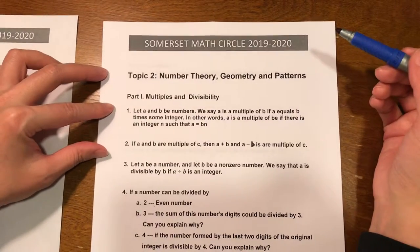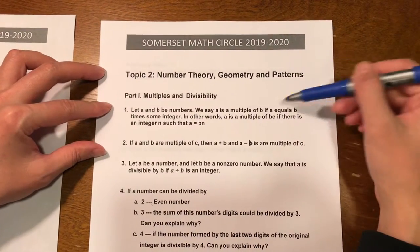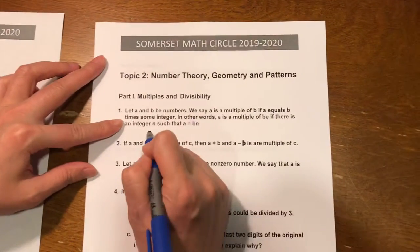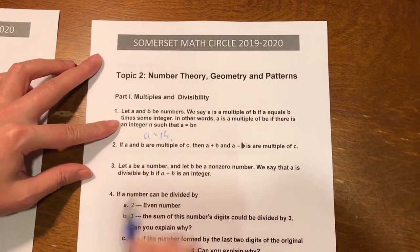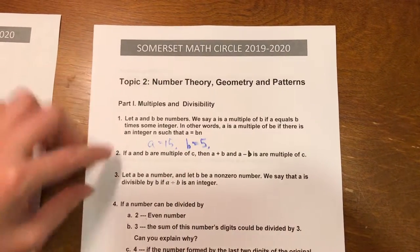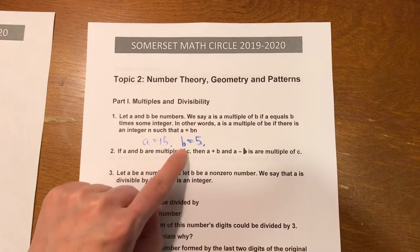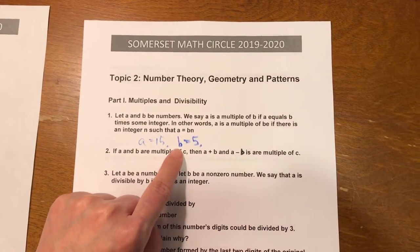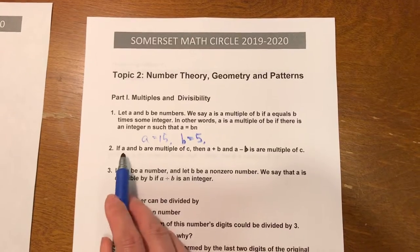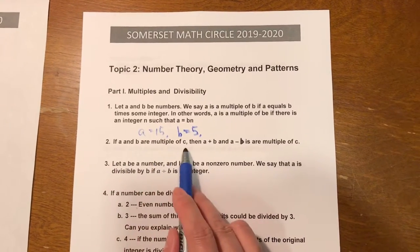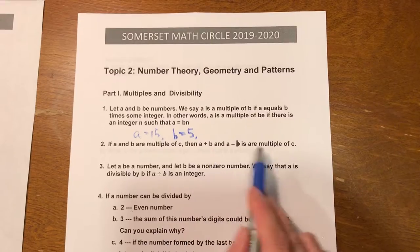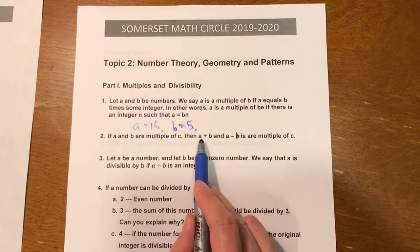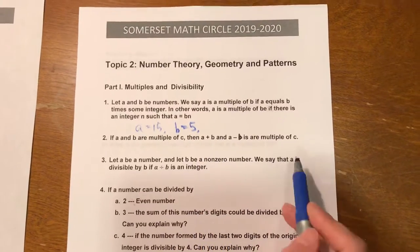Number 1, let A and B be numbers. We say A is a multiple of B if A equals B times some integer. For example, if A is number 15 and B is 5, we will say A is a multiple of B because A is 3 times B. If A and B are multiples of C, then A plus B is a multiple of C, and A minus B is also a multiple of C.